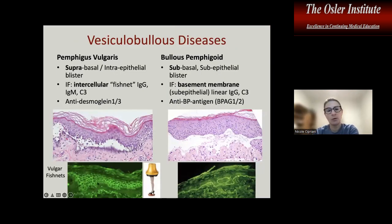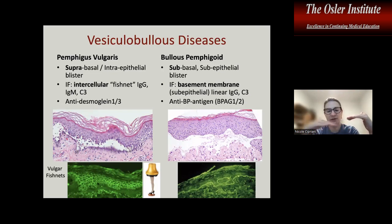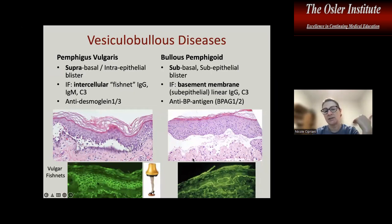The other biopsies for which immunofluorescence is helpful are the vesiculobullous diseases — pemphigus vulgaris and bullous pemphigoid. In pemphigus vulgaris, the antigen is the desmosomes between epithelial cells, producing an intra-epithelial blister where cells break apart from each other, with retention at the basement membrane. You'll see a fishnet-like IgG, IgM, and C3 pattern on IF. In bullous pemphigoid, the antigen is in the basement membrane, so the entire epithelium blisters off, with deposition at the basement membrane level.